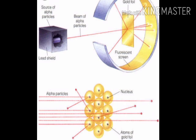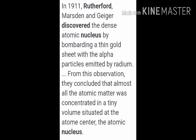In 1911, Rutherford, Marsden, and Geiger discovered the dense atomic nucleus by bombarding a thin gold sheet with alpha particles emitted by radium. From this observation, they concluded that almost all the atomic matter was concentrated in a tiny volume at the atomic center, later called the nucleus. Some particles bounced back to their original positions and some were deflected, leading to these conclusions.